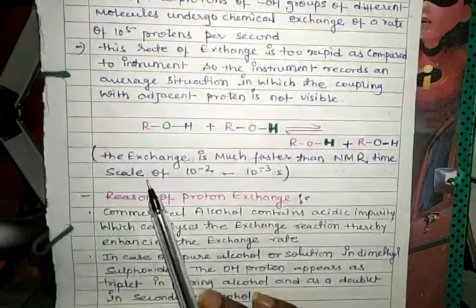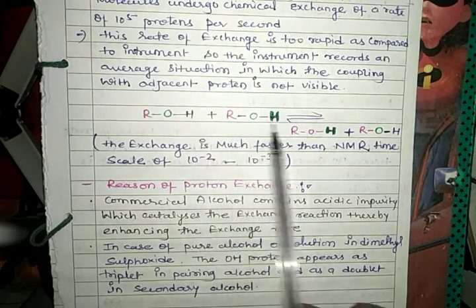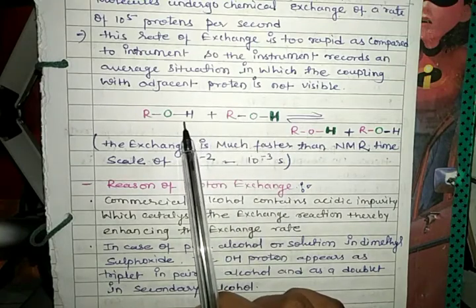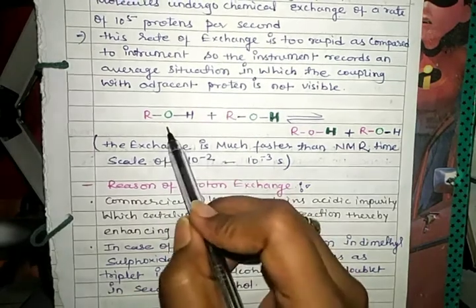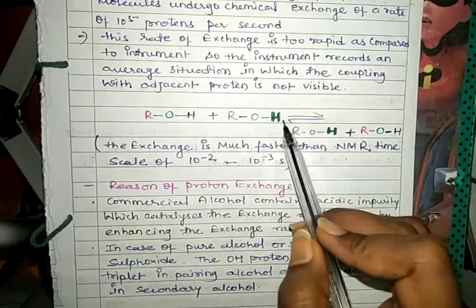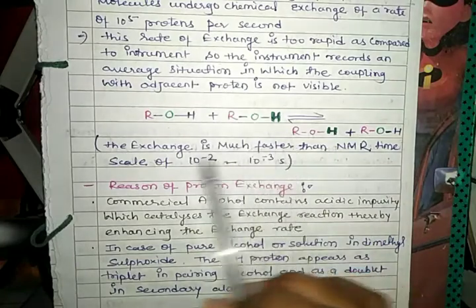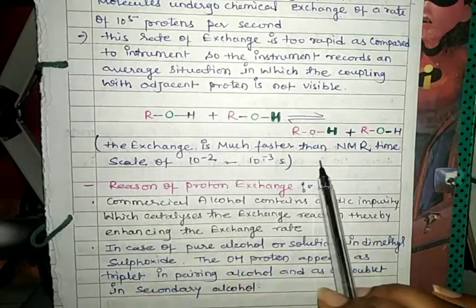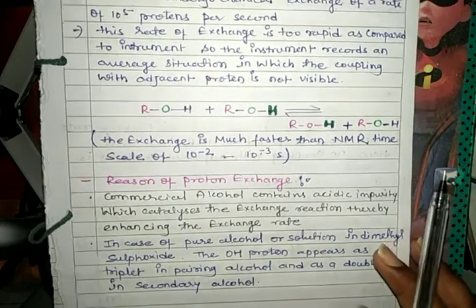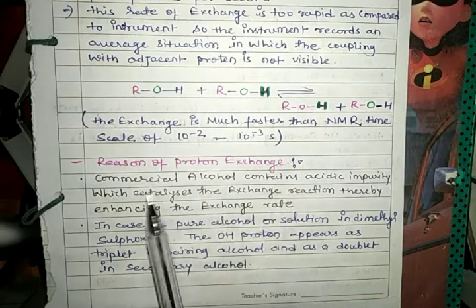This rate of exchange is too rapid compared to the instrument's timescale, so the instrument records an average situation in which coupling with adjacent protons is not visible. The process of chemical exchange shows hydrogen exchanging state from the first to the second state or vice versa. The exchange is much faster than the NMR timescale of 10⁻² to 10⁻³ seconds.